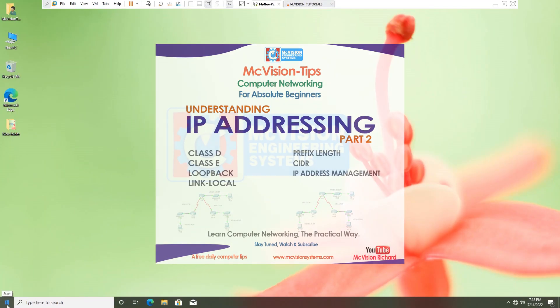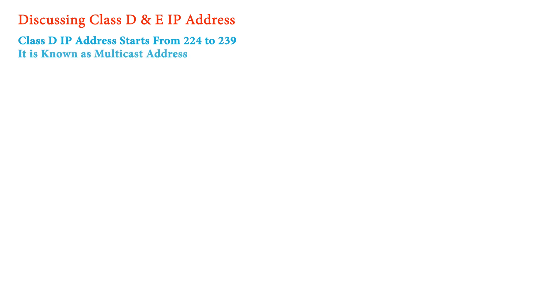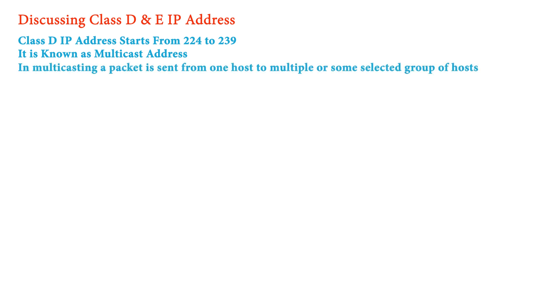Starting with today's lesson, let's see what class D and E IP addresses do. The class D IP address starts from 224 to 239 and this address range is known as a multicast address. They are mainly used for multicasting, so we don't assign such IP address ranges to individual hosts on a network. Multicasting is the process of sending a packet from one host to multiple or a selected group of hosts.